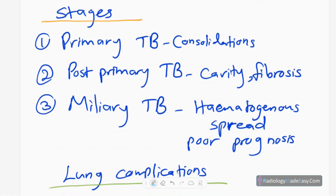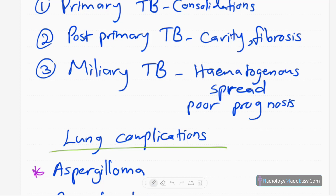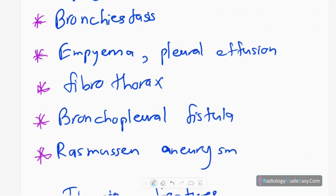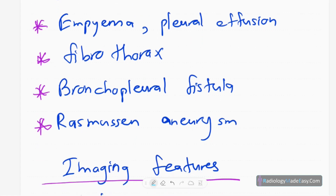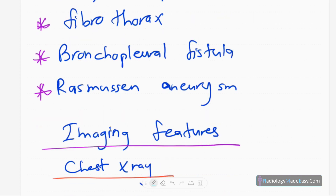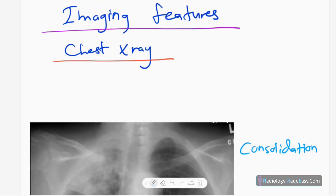The sinister one is miliary TB, which means hematogenous spread of TB — it has a poor prognosis. Those are the three main stages. Complications include aspergilloma or mycetoma formation within a cavity, traction bronchiectasis, emphysema, pleural effusions, empyema, fibrothorax, bronchopleural fistula causing unresolved pneumothorax, and Rasmussen aneurysms in the pulmonary arteries.